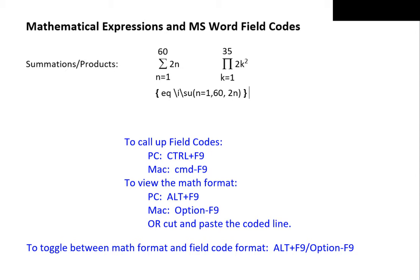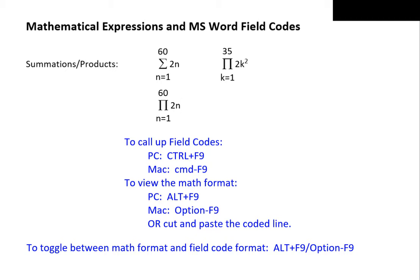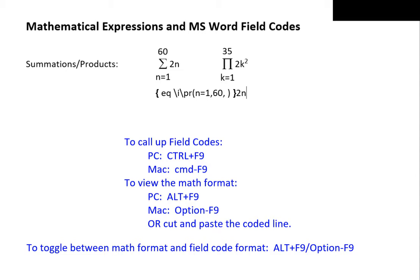For a product, we toggle to field code mode. Instead of typing SU, we type PR — for product, of course. Toggle out, and we have our product. On an added note, we find it easier for editing purposes to have the summand or the multiplicand typed outside the summation or product field code. We toggle to field code mode, take out the multiplicand but leave a space between the comma and the closing parenthesis, then type the multiplicand outside the product field code. Toggle out. This way, we do not have to get inside the sum or product field code to change the summand or the multiplicand.